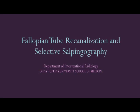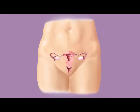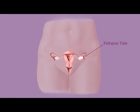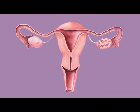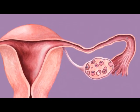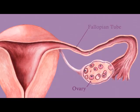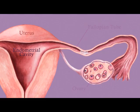Fallopian tube re-canalization and selective salpingography. The most common cause of infertility in women is a blockage or narrowing of one or both fallopian tubes. During fertilization, the egg travels from the ovary through the fallopian tube and into the endometrial cavity of the uterus. Conception cannot occur if a blockage prevents the egg from traveling its normal path through the fallopian tube and into the endometrial cavity.